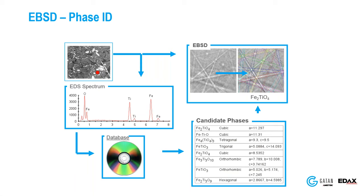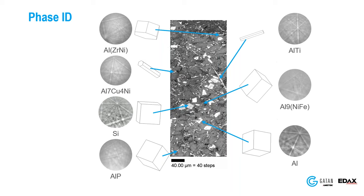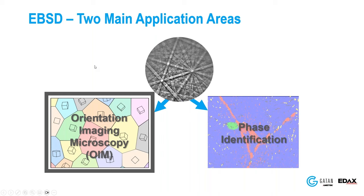You can do this over and over again with all the different phases in your material to positively identify the crystal structure associated with the points of interest, as seen in this example from a mineral. That's very helpful, though it's somewhat of a secondary use of EBSD.